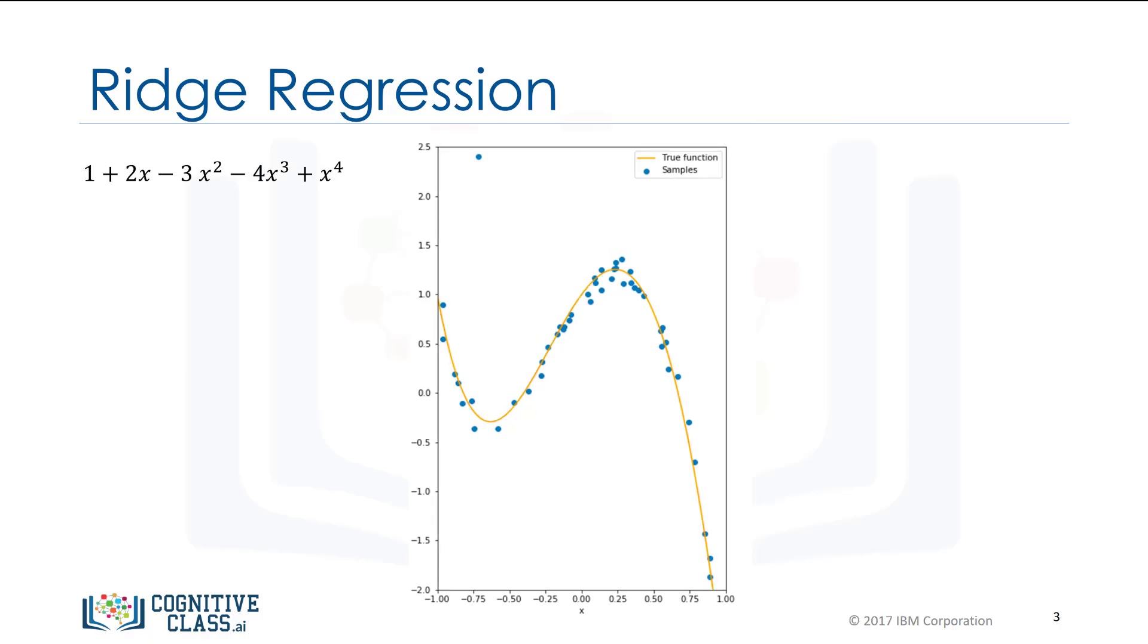In many cases, real data has outliers. For example, this point shown here does not appear to come from the function in orange. If we use a tenth-order polynomial function to fit the data, the estimated function in blue is incorrect and is not a good estimate of the actual function in orange.